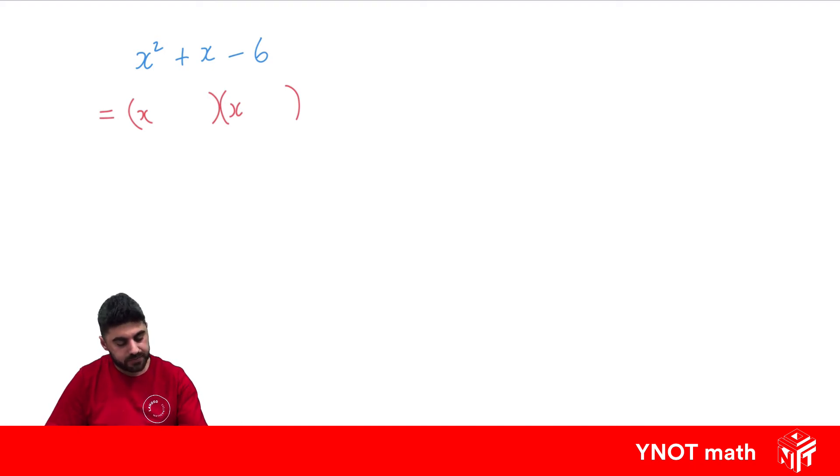In this case, it's going to be 3 and 2, and it's going to be +3 and -2.